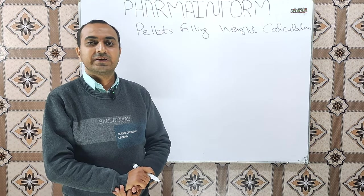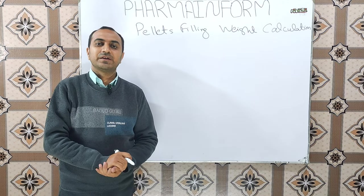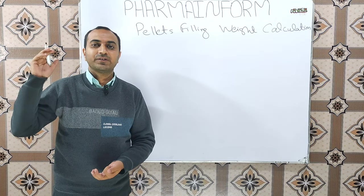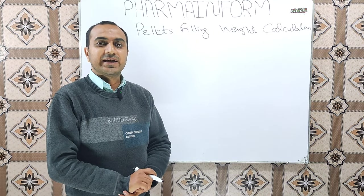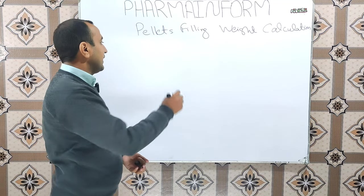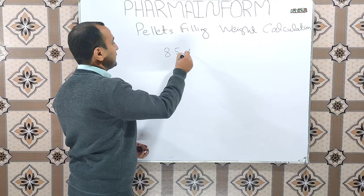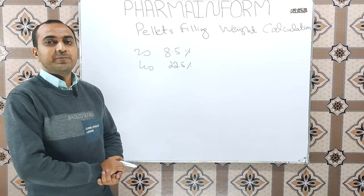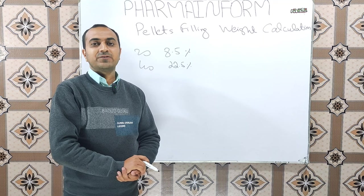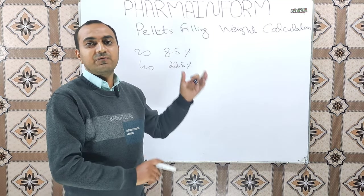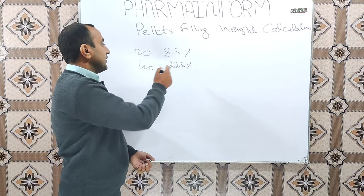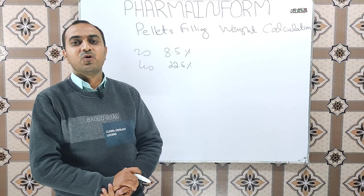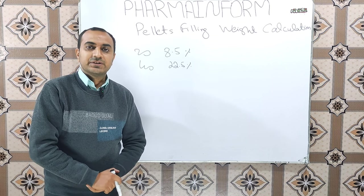S-omeprazole enteric coated pellets are available in 8.5% and 22.5% concentrations. Enteric coated pellets for 20 mg are available as 8.5%, and 40 mg are available as 22.5%. 8.5% means that in 100 mg of pellets, 8.5 mg is S-omeprazole and the remaining portion is other excipients. Similarly, 22.5% means 100 mg of pellets contain 22.5 mg of S-omeprazole and the remaining are other excipients.